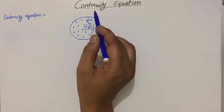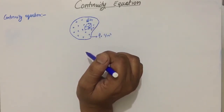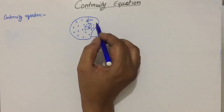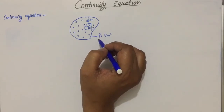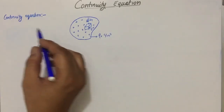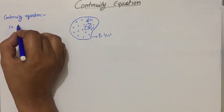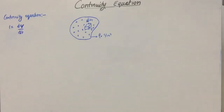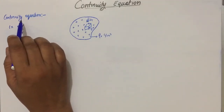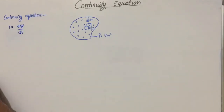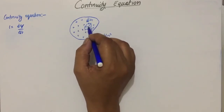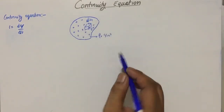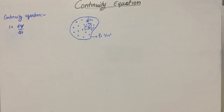Today's topic of discussion is the continuity equation in electrostatics. For that purpose we have considered a differential volume having volume charge density ρv. We know that current can be written as the rate of flow of positive charge. According to the continuity equation, the amount of electric charge in any differential volume of space can only change by the amount of electric current flowing into or out of that volume.